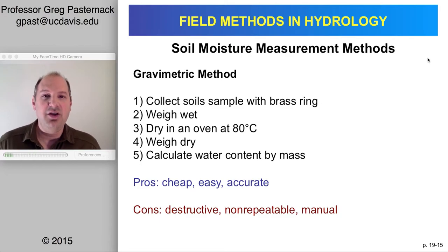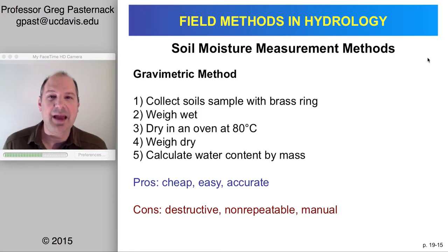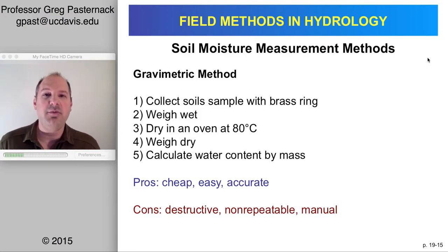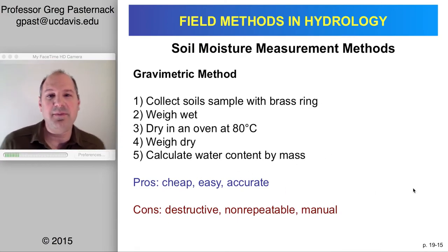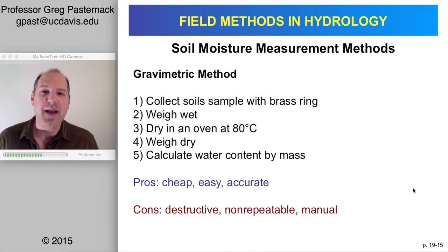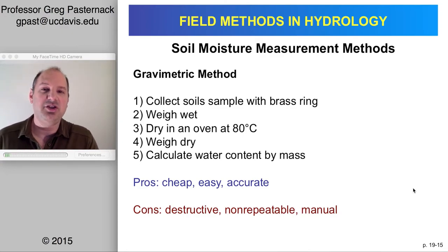To directly measure the amount of water in the soil, there are different technologies. The classic, most straightforward method is the gravimetric method, where you take a sample of known volume from the ground, weigh it wet, weigh it dry, and the difference gives you the water content by mass or by volume. The big problem is it's destructive — you can't go back to the exact same spot, and measuring through depth would require making a trench.